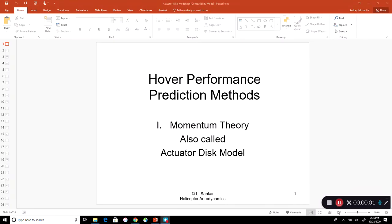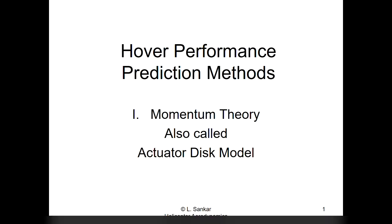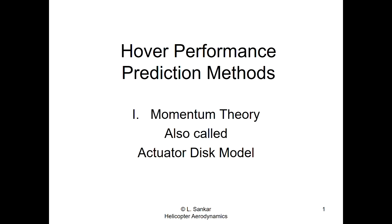We'll get started with estimating some of the performance characteristics of helicopters. As mentioned in a previous slide, this is done in three ways. First we look at hover performance - hover means you're standing still, not moving in the forward direction at all. We'll do hover performance first and in two ways. One is a very simple back-of-the-envelope technique called the actuated disc model, which is what this set of slides talks about.